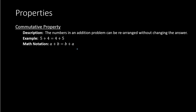A way to remember this is the commutative property — we can look at the root word commute. You see the word commute in commutative. The word commute means to travel or to move. For example, your parents might commute to work, meaning they have to make a drive to get to work.